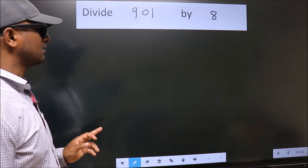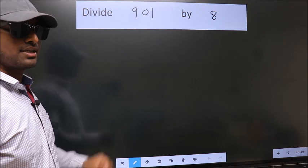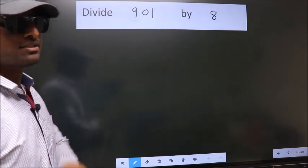Divide 901 by 8. To do this division, we should set it up in this way.